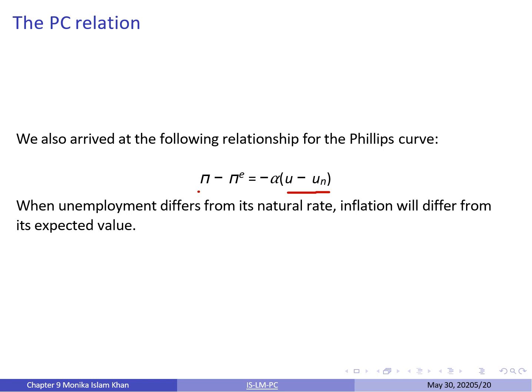We also arrived at the following relationship for the Phillips curve. Using this Phillips curve, we want to deduce certain links — specifically the relationship between unemployment and the natural rate of unemployment, and inflation and expected inflation. When unemployment differs from its natural rate, inflation will differ from its expected value. When the unemployment rate equals its natural rate, inflation equals its expected value. When unemployment is lower than the natural rate, inflation turns out to be higher than expected. If unemployment is higher than the natural rate, inflation turns out to be lower than expected.